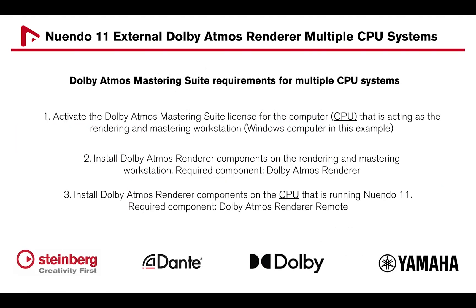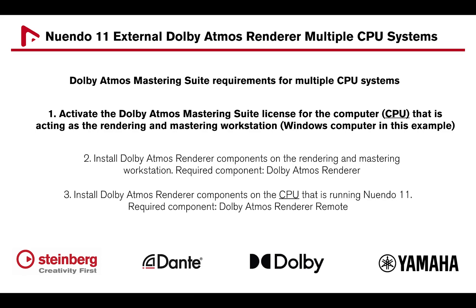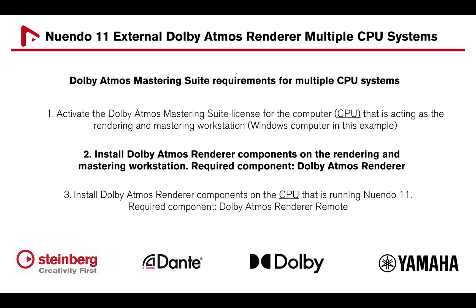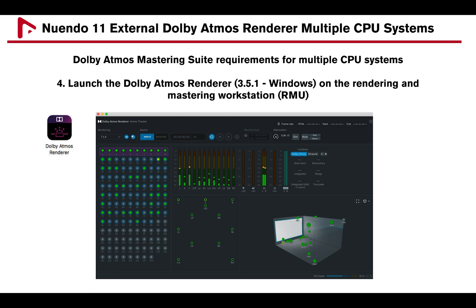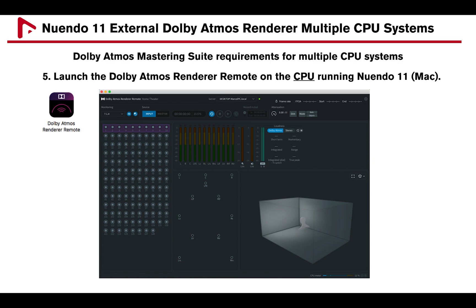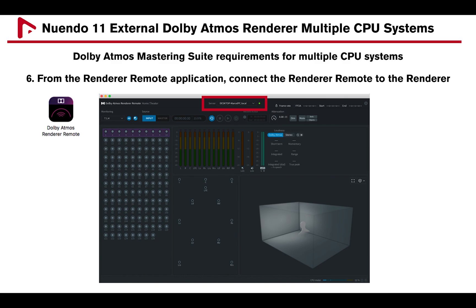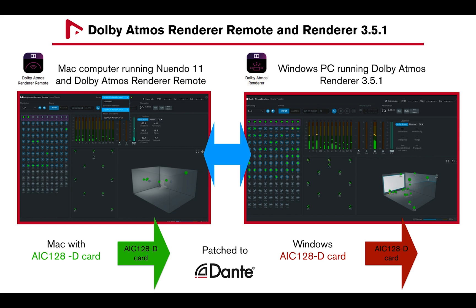The Dolby Atmos Mastering Suite license should be activated on the rendering mastering workstation — in this example the Windows computer — with the Dolby Atmos Renderer software installed. The Dolby Atmos Renderer Remote software should be installed on the computer running new Windows 11. You can then open both software applications, connect the Renderer Remote to the Dolby Atmos Renderer 3.5.1, and once the connection is made, a bi-directional communication is established.